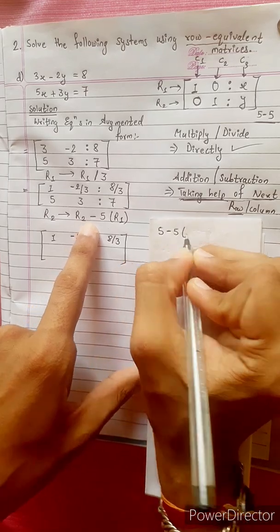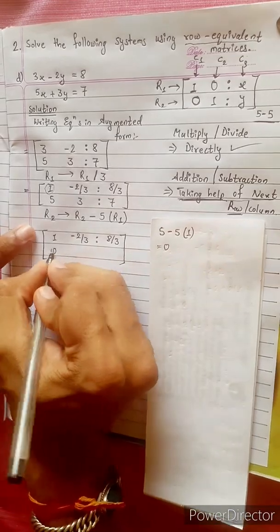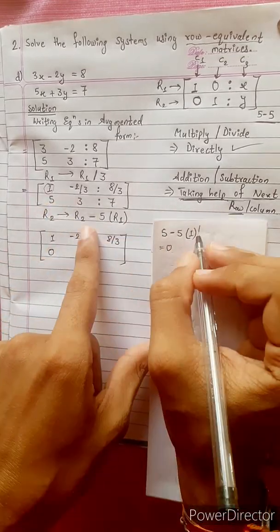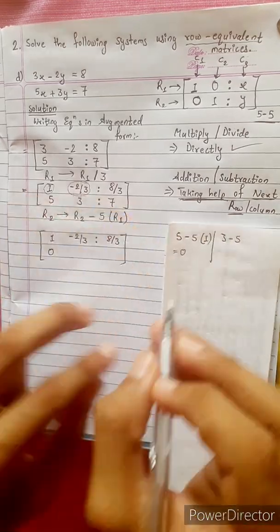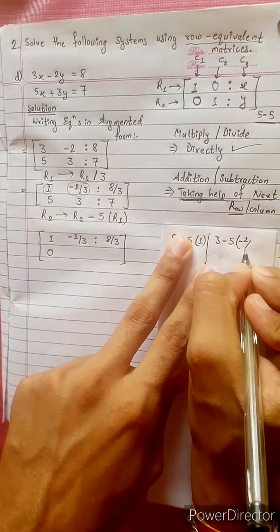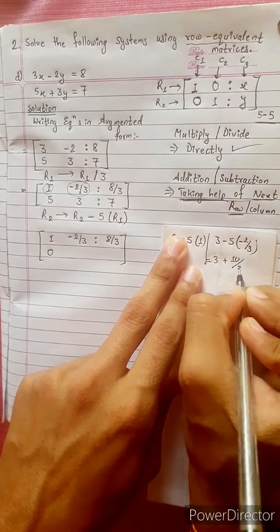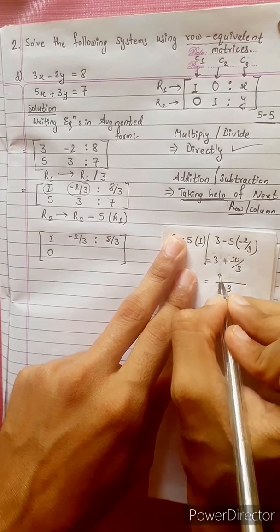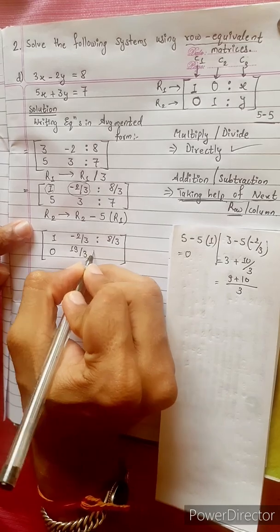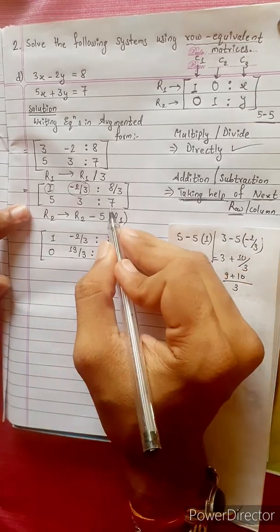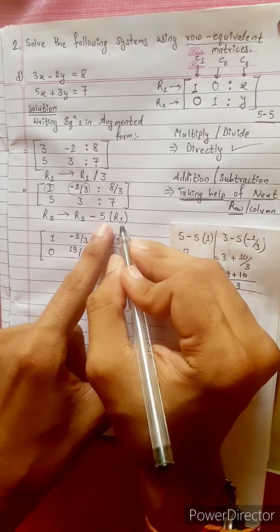This will be R1 to R1. This will be R2 minus 3. This will be R2 minus 5 times R1. This will be R3 minus 2 by 3.